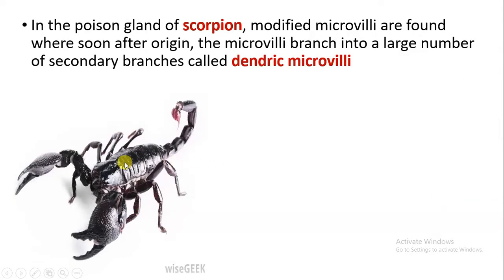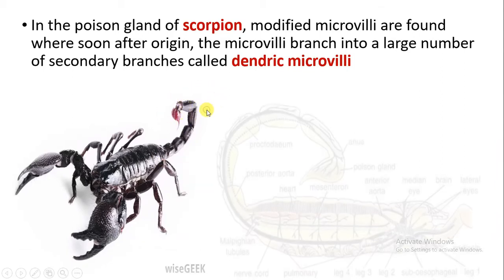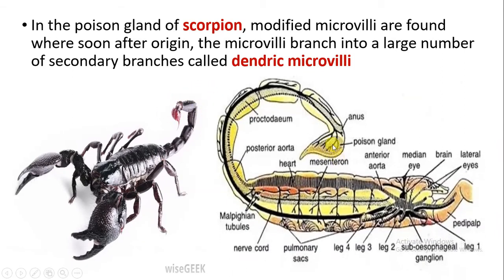There are also some modified microvilli present in the poison gland of the scorpion, where the microvilli are branched. When microvilli are in branched form, that is a modified version, and these are called dendritic microvilli.